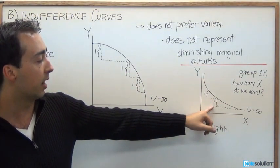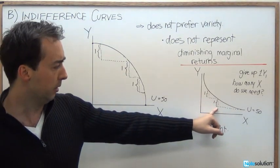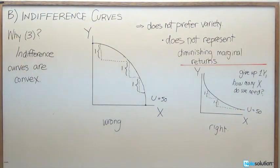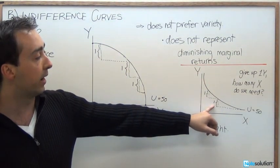But here, if we give up another bag of chips, it might take several cans of coke to get us back to that utility value of 50. So you see here that we're going to need more and more cans of coke in order to equal that one bag of chips.